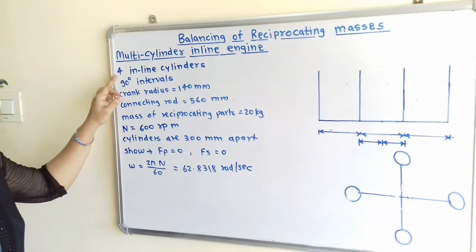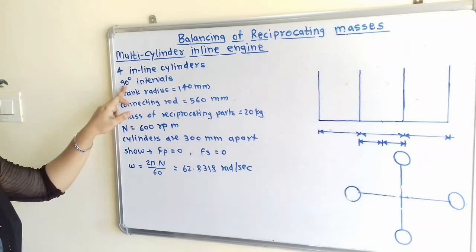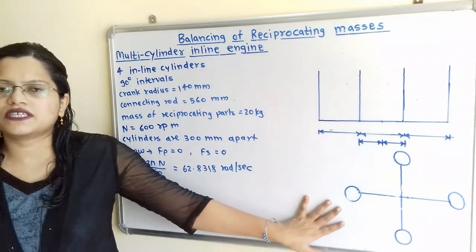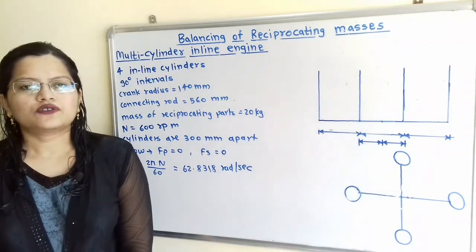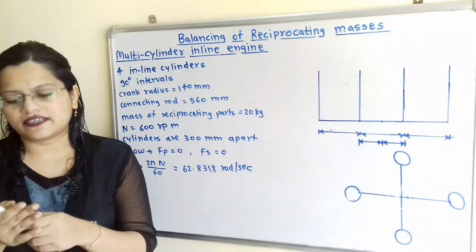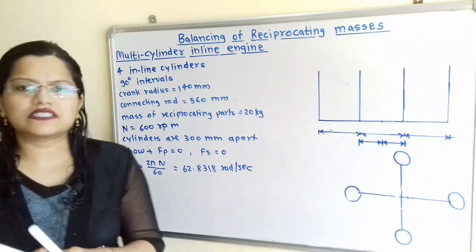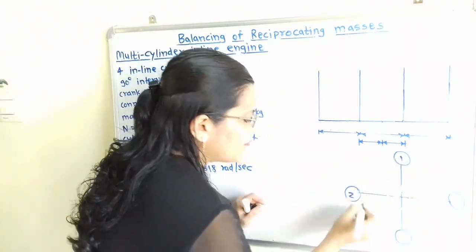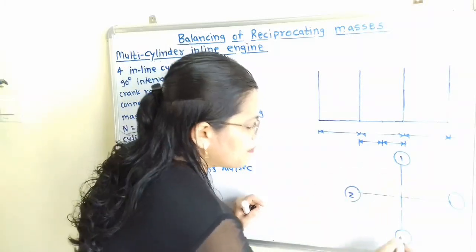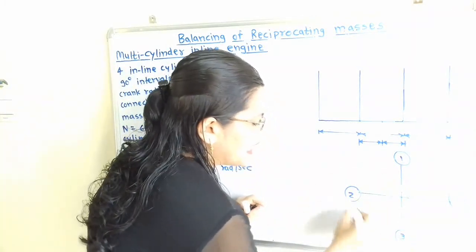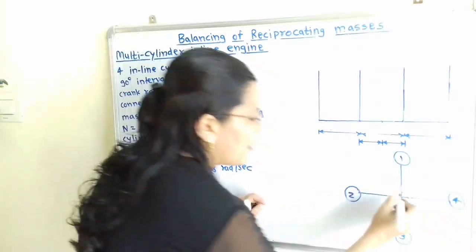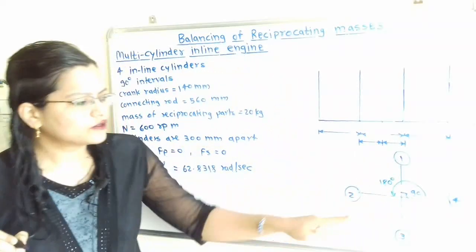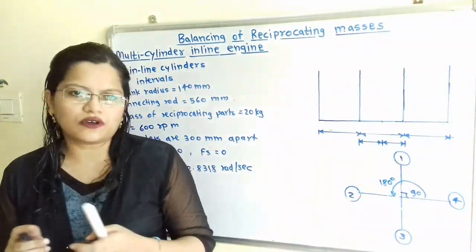For all these 4 inline cylinders, the cylinders are placed at 90-degree intervals. We have to show this in the angular position diagram. The angle between each cylinder is 90 degrees. Cylinder 1 is at 90°, cylinder 2 at 180°, cylinder 3 at 270°, and cylinder 4 at 360°. So the angular positions are 90°, 180°, 270°, and 360°.